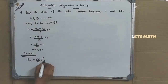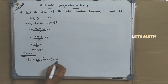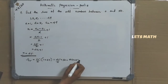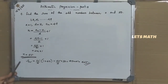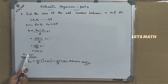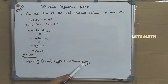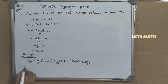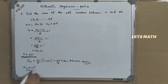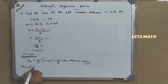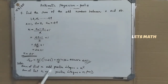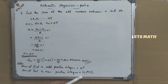S25 equals 25 by 2 into first term plus last term, that is 25 by 2 into 50, giving 25 into 25 equal to 625. Note: sum of first N odd positive integers is always N squared, and sum of first N even positive integers is N into N plus 1.